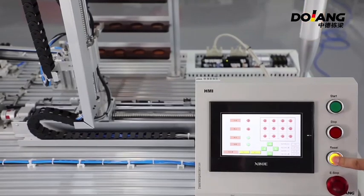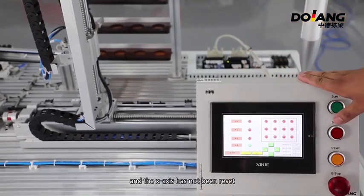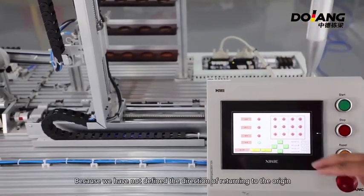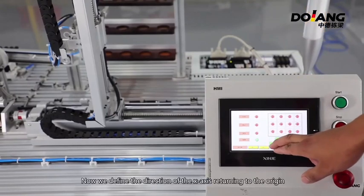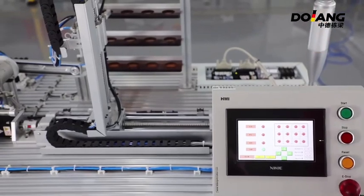At this point, we press the reset button. Then the Z-axis has been seen and the reset has begun. And the X-axis has not been reset because we have not defined the direction of returning to the arranging.